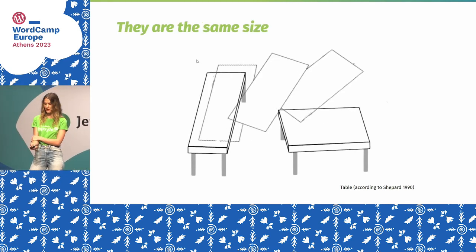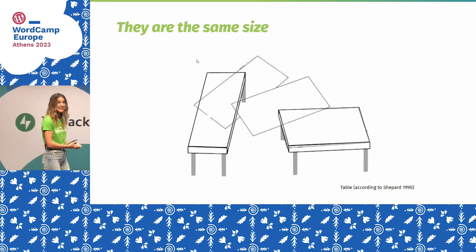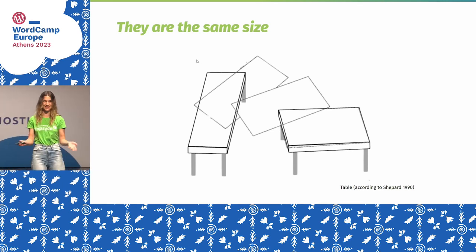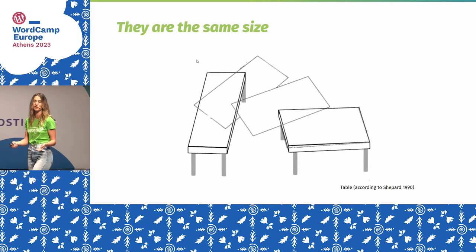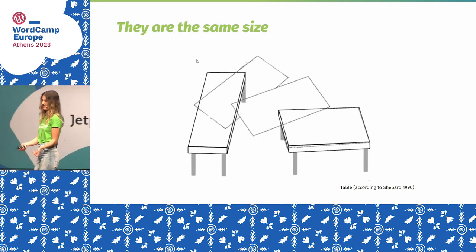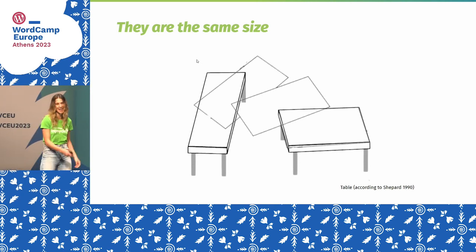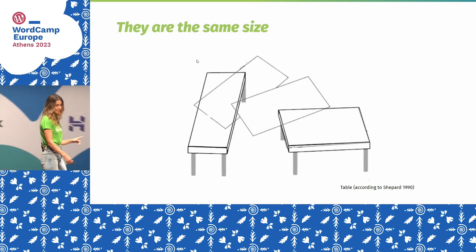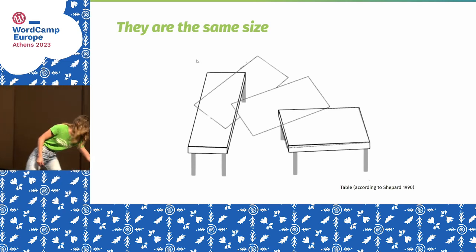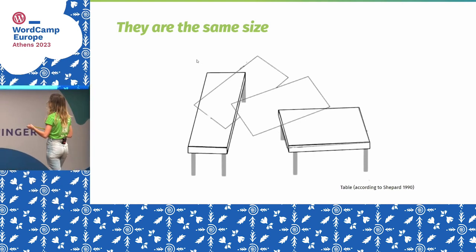When I first saw this, I was in a restaurant drinking coffee with my friends. A friend showed me this example and asked, what do you think is longer? I said, of course, table A. And she said, no, they are the same size. I was like, what? I cannot believe it. So I took a spoon and measured it. And I also brought you something to measure it, to prove it to you.